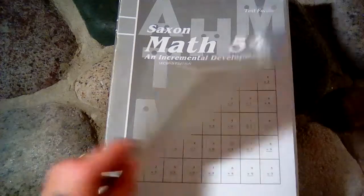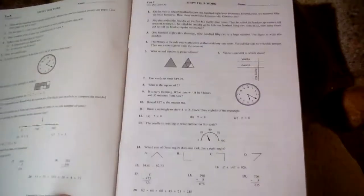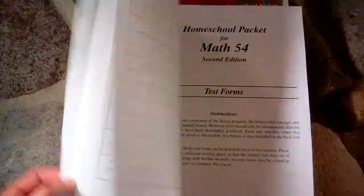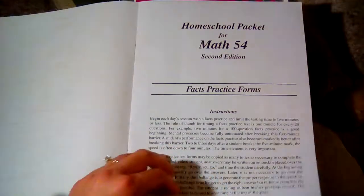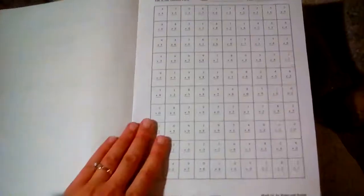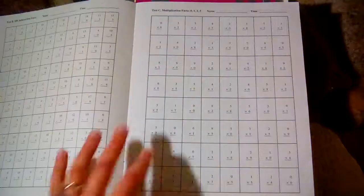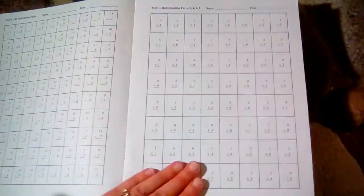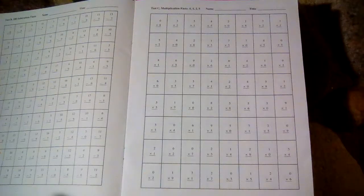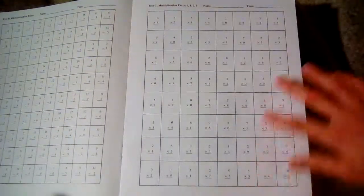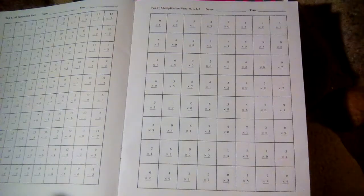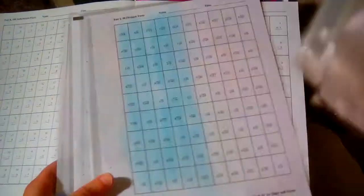You will also need the test forms. This has the tests in it here. But it also has, very importantly, in the front, it has your facts practice worksheets. So you make copies of these. These are reproducible. Each day you would do a fact sheet. What I did for my daughter when we did this was I made one copy and I laminated them all.